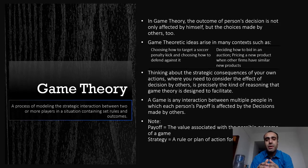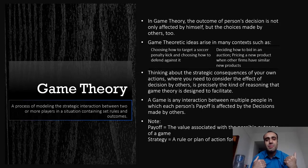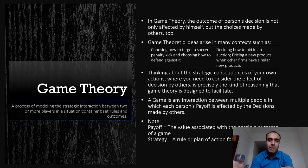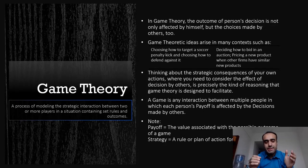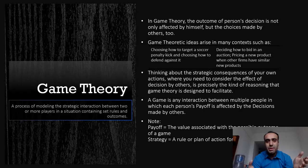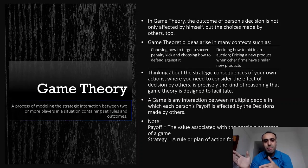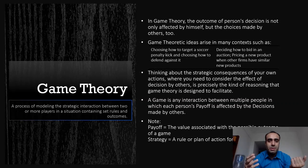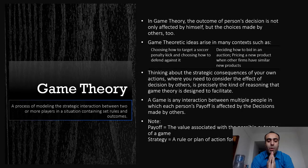In game theory, the outcome of some person's decision is not only affected by the person himself but also by the choices made by other participants. Game theory ideas can range from as simple as choosing how to target a penalty kick and choosing how to defend against it, to some complex ideas such as deciding how to bid in an auction or pricing a new product when other firms have similar products.